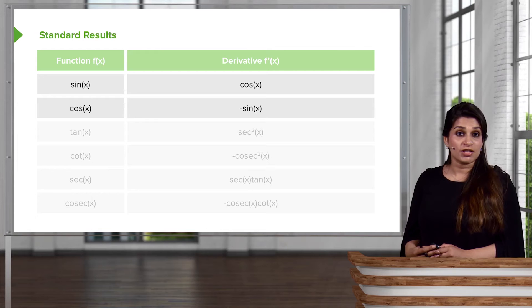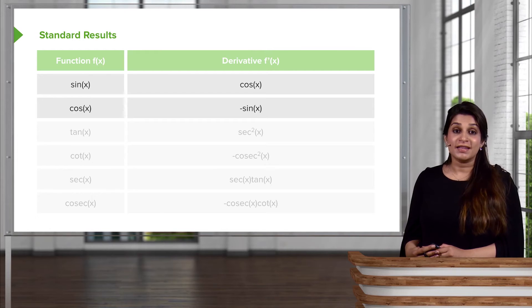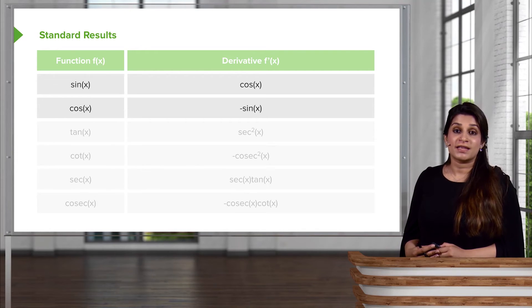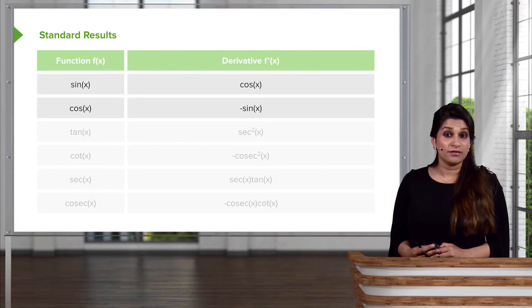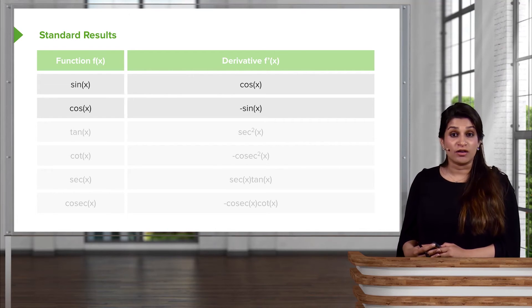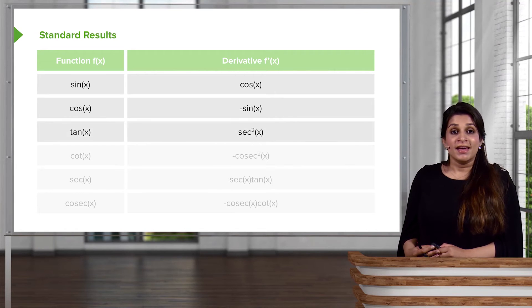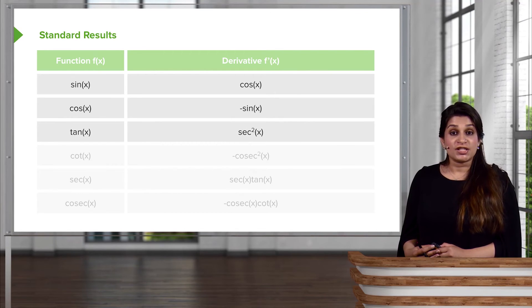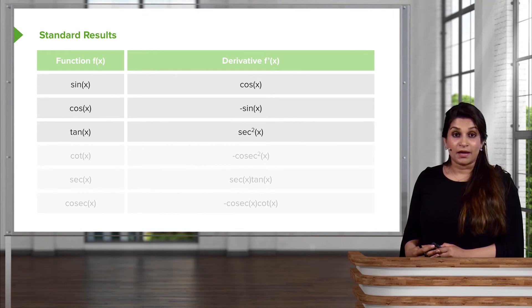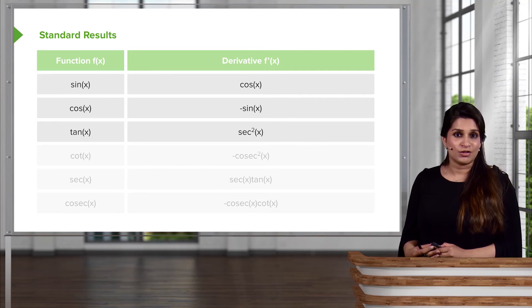If you are differentiating cosine of x, the gradient or differential of cosine of x is given by minus sine of x. This can get a little bit confusing, but it's just a matter of practicing. Tan of x differentiates to sec squared of x, and we will define what sec is shortly.